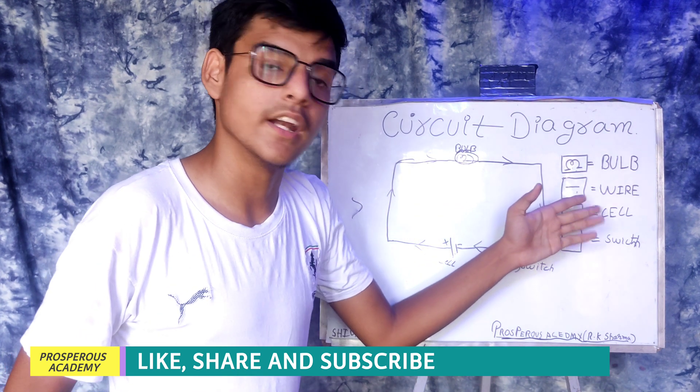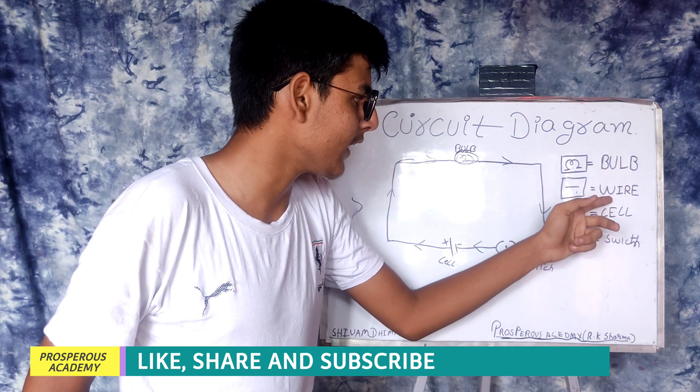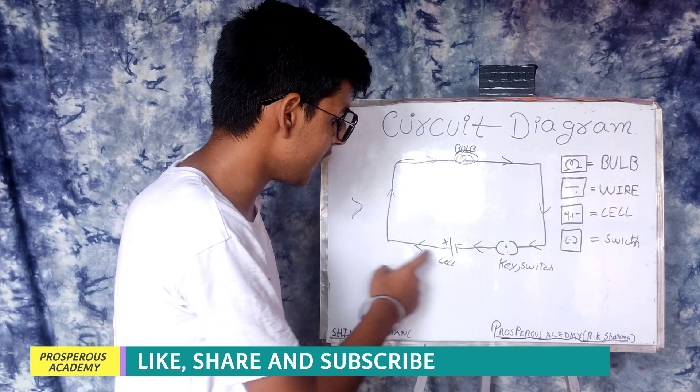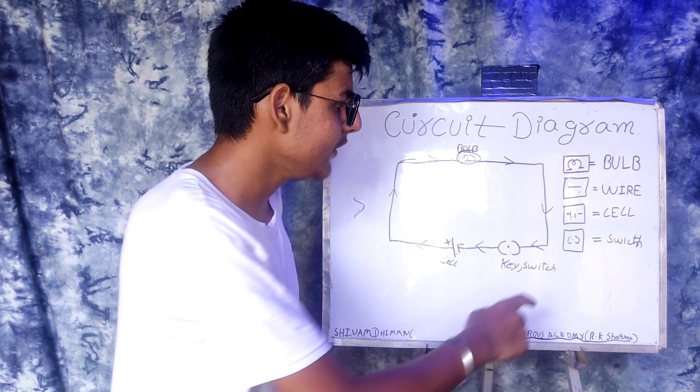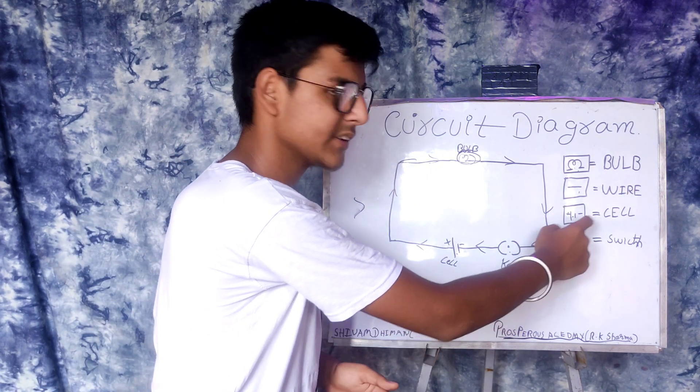Second, we have the wire. This line represents the wire which is around this circuit everywhere. And third, we have a cell. This symbol represents the cell. Here is the cell in this circuit.